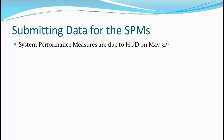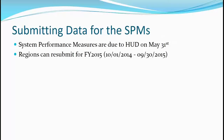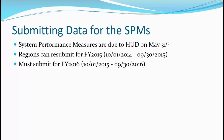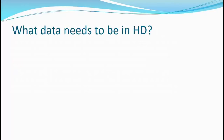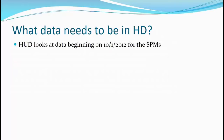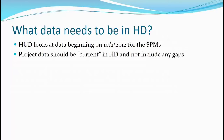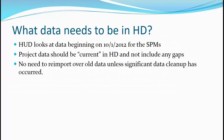The System Performance Measures are due to HUD on May 31st. Regions can resubmit for FY15 (2014–2015) and must submit for 2016 by May 31st. The look-back period for the return-to-homelessness measure — measure number two — goes back to October 1st, 2012. In general, administrators for regions have been loading data going back to 2012, and the data for each project should be current in the platform.